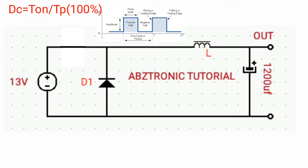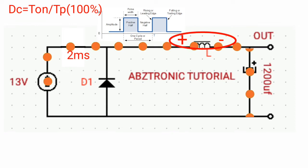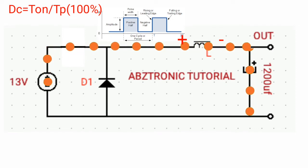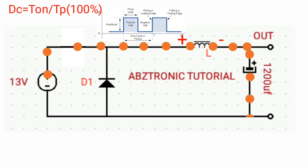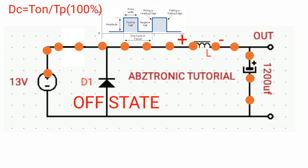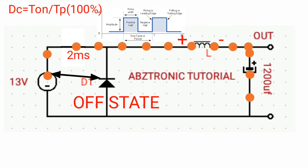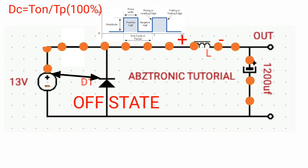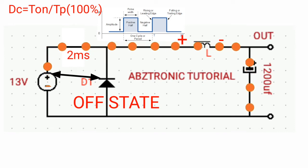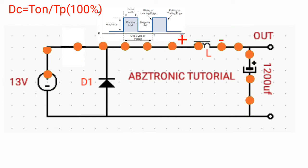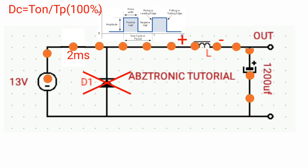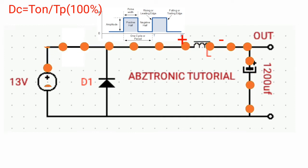When the switch is closed, the current flows through the inductor with positive and negative polarity respectively, going in the right direction and charging the capacitor. Let's say the capacitor will be charging 10% within two milliseconds. At this point, the diode is in the off state, since the cathode side — the negative side — is connected to the positive side of the battery, so no current flows through the diode. All the current flows through the inductor and charges the capacitor.